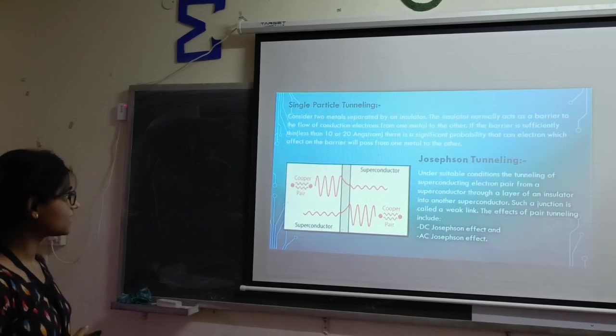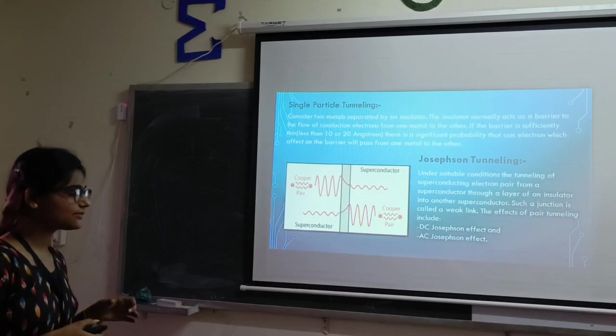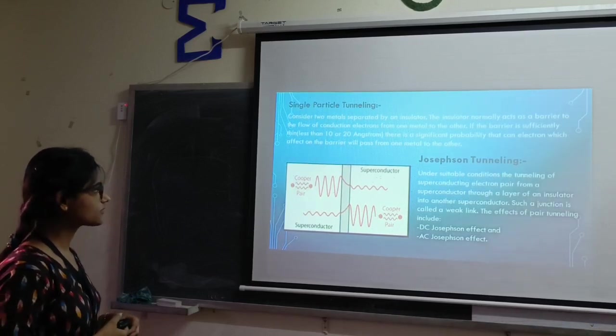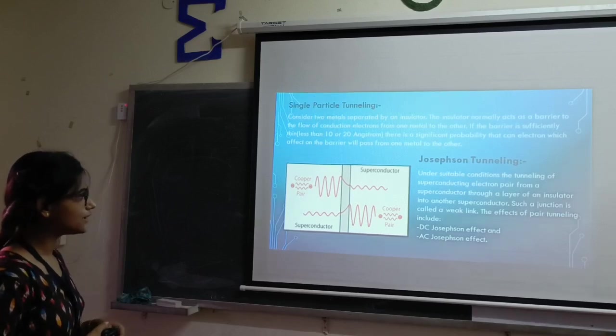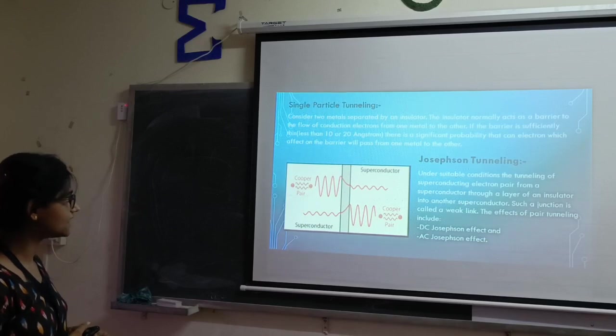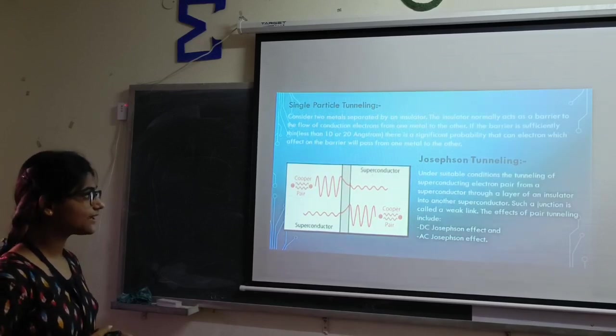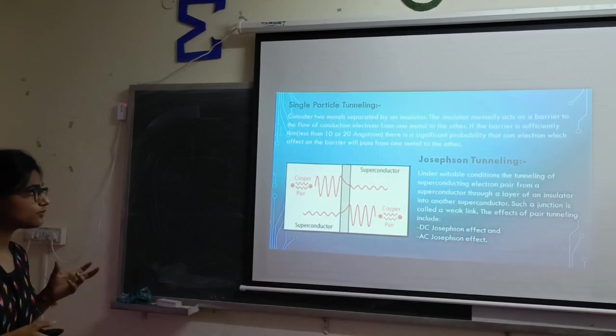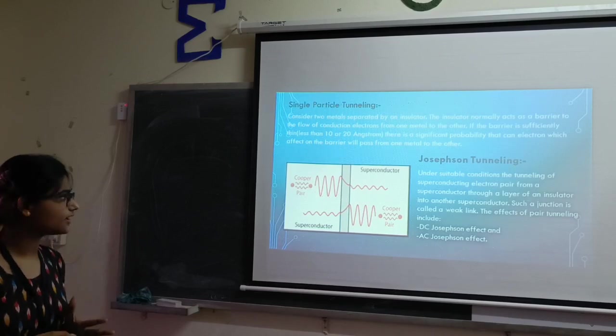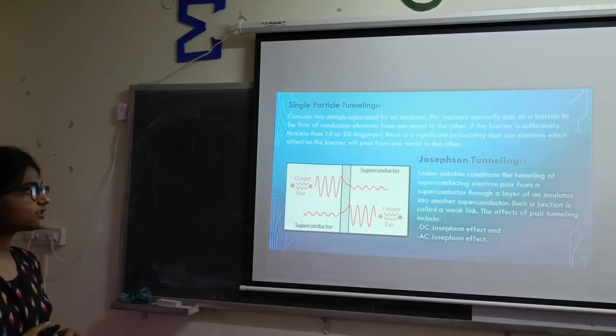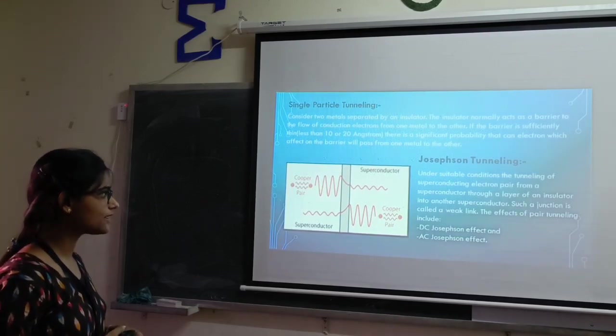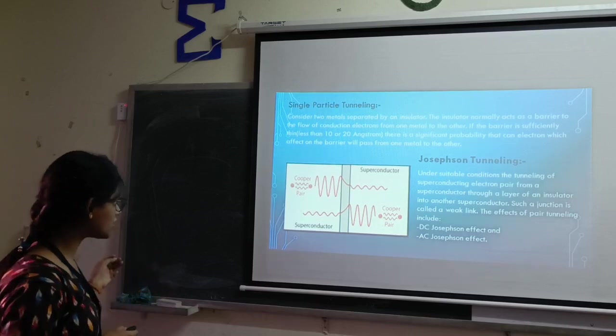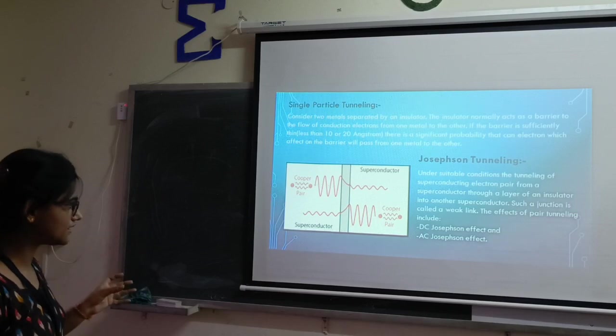Single particle tunneling and Josephson tunneling. Single particle tunneling: consider two metals separated by insulator. The insulator normally acts as a barrier to the flow of conduction electrons from one metal to the other. If the barrier is sufficiently thin, less than 10 or 20 Angstrom, there is a significant probability that the electron which strikes the barrier will pass from one metal to the other through the insulating layer. Under suitable conditions, the tunneling of superconducting electron pairs from a superconductor through a layer of insulator into another superconductor, such a junction is called a weak link.